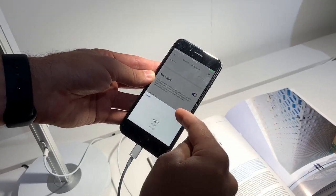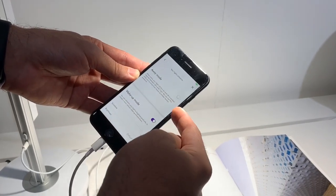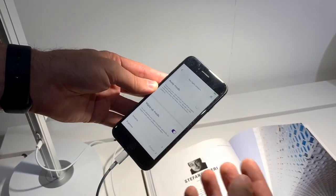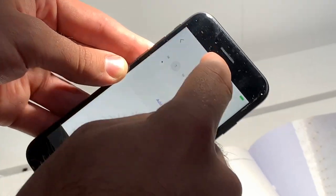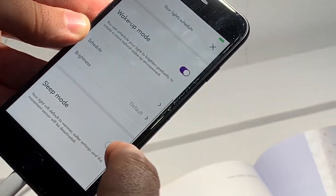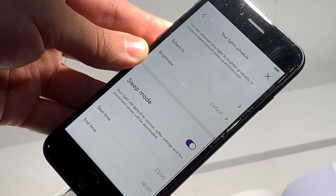You can set schedules like away mode to simulate occupancy when you're on vacation, get it to wake you up and set your schedule for what days and times you want to wake up, as well as enabling sleep mode and setting the times you need to be in sleep mode.